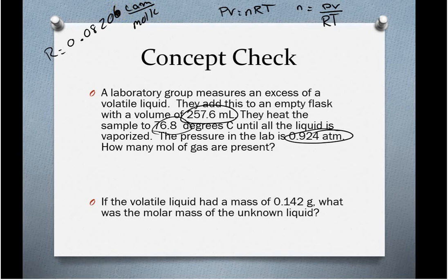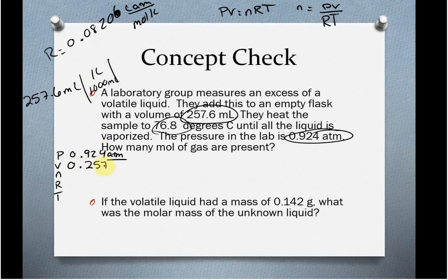Now, we are going to plug in everything, but first I am going to make sure we have the right units. PVNRT. Our P is 0.924 atmospheres. Those units are good. Volume is 257.6 milliliters. That is actually how you measure it in lab. You are going to use a graduated cylinder and measure in milliliters. We will have to convert to liters by dividing by 1000 milliliters every time you have one liter. So your liter is 0.2576.